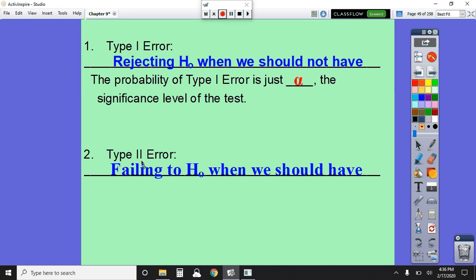And our type 2 error was when we failed to reject the null hypothesis, but we really should have rejected it. And so the way that I kept those two things straight was I'm always thinking in a hypothesis test that I really want to reject the null hypothesis. And so if that's the one thing that I'm thinking that I need to accomplish in my hypothesis test, then rejecting the null should be my first priority. And so that would be my type 1 error.